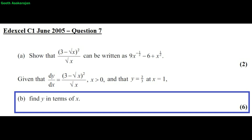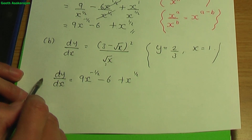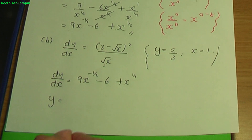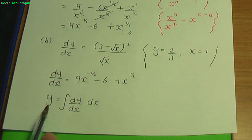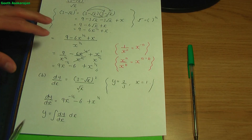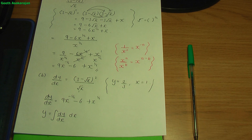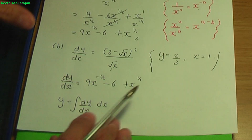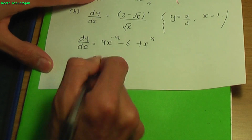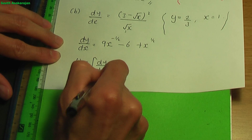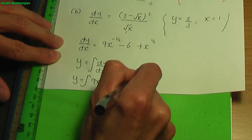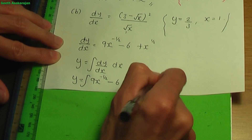If you're given dy over dx, to find y we need to integrate dy over dx. I have created a video explaining this concept and I'll provide a link in the description below. So we need to integrate 9x to the power minus half minus 6 plus x to the power plus half with respect to x.